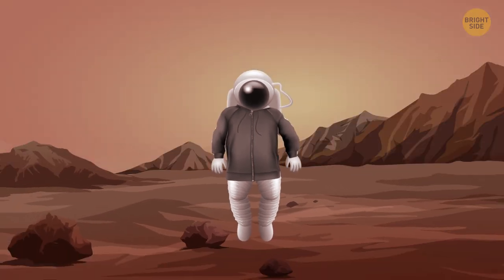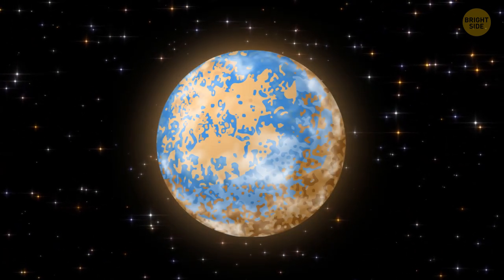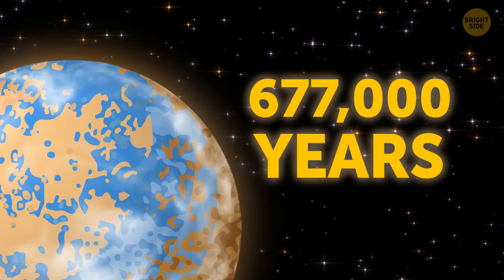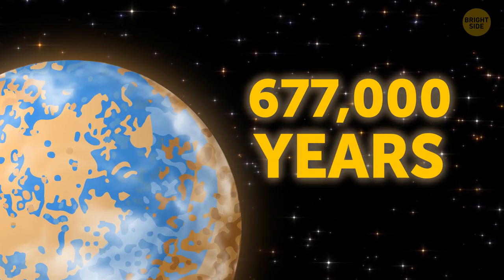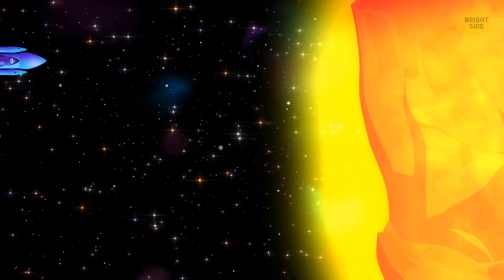There might be an atmosphere, mountains, seas, and oceans here. Which means this planet might be suitable for a human colony. But it would take about 677,000 years to get here using traditional rockets.